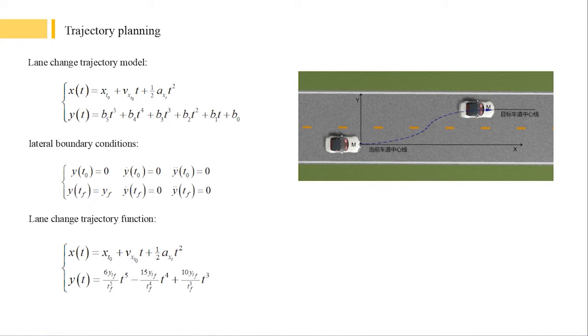The vehicle travels on the centerline of the target road at a constant speed. The displacement at the end time is the width of the lane. The lateral velocity and the lateral acceleration are both zero. Combined with the boundary conditions, the following lane change trajectory function can be obtained.